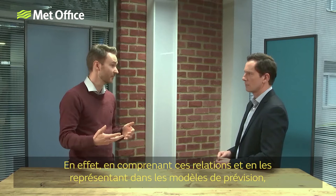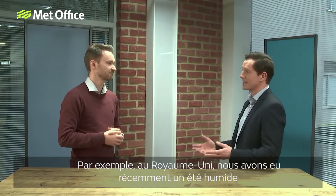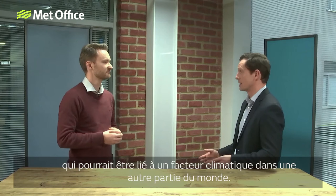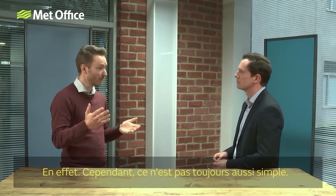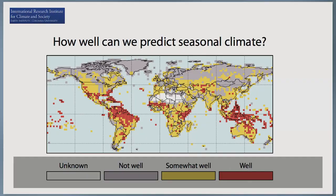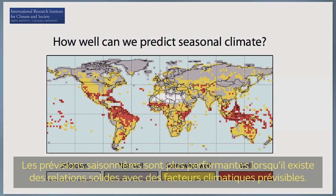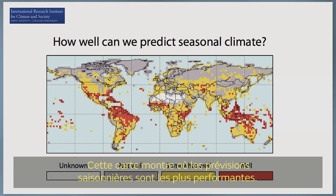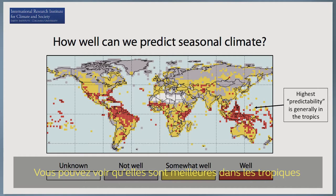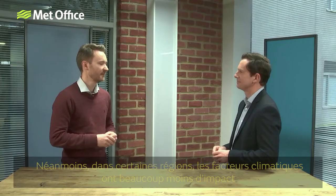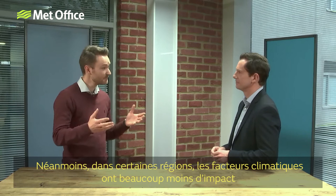For example, if here in the UK we have a wet summer, that could be related to a climate driver in a completely different part of the world. Seasonal forecasts perform best when there is a strong relationship with predictable climate drivers, and this map shows where seasonal forecasts perform well and not so well. Seasonal forecasts typically perform better in the tropics where relationships between the ocean and the atmosphere are usually strongest — these regions are referred to as having higher predictability. In some places climate drivers have much less of an effect, and in these places there's lower predictability, meaning that seasonal forecasts won't be as accurate.